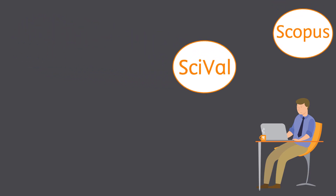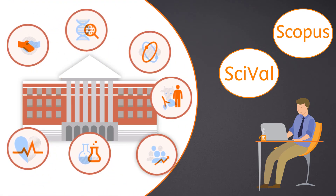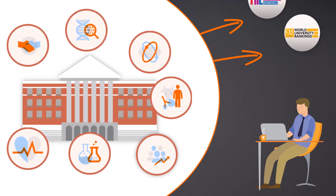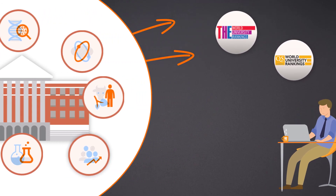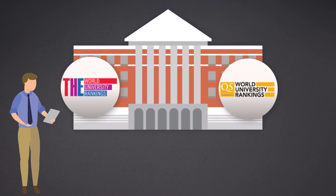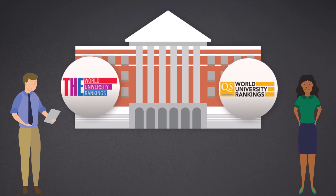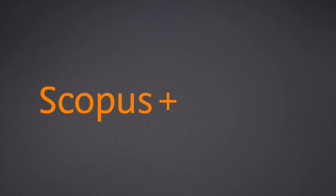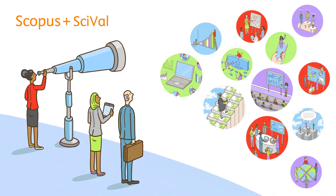Not only do Scopus and SciVal bring clarity to the whole of the university's research, but they also provide a more granular understanding of the data going into the rankings — data and insights that can help shape the university's future. Now when the next ranking reports are announced, Lee is not surprised by where the university is placed, and neither is the Vice Chancellor of Research. The quality of Scopus data and the power of SciVal analytics work together to inform strategic decisions and provide insightful views into research across the globe.